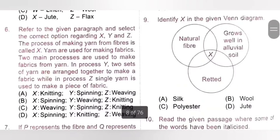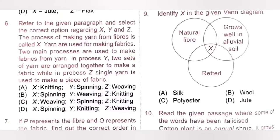Ninth question: Identify the fiber in the given Venn diagram. The fiber is a natural fiber with retting process involved, and it grows well in alluvial soil. Jute is a natural fiber obtained from stem of plants, grown in alluvial soil in the delta region of Ganges and Brahmaputra, and involves retting. Option D, Jute, is the correct answer.